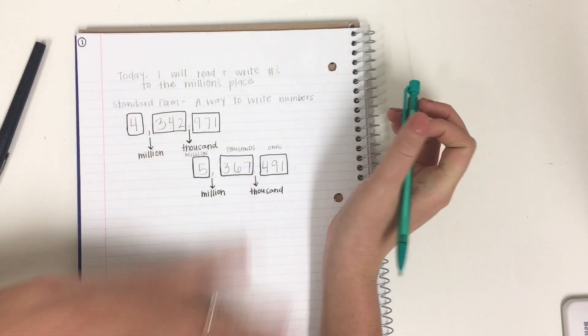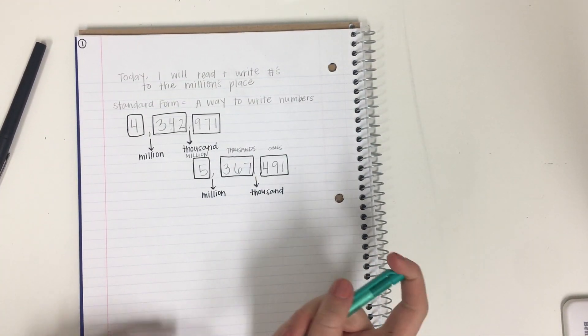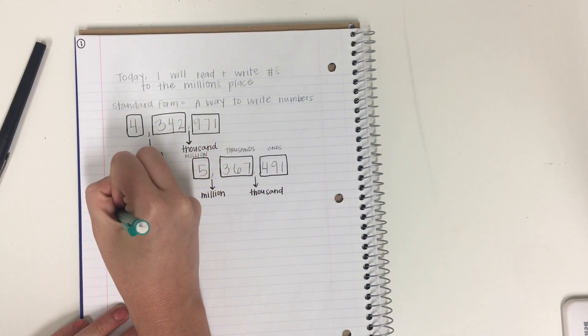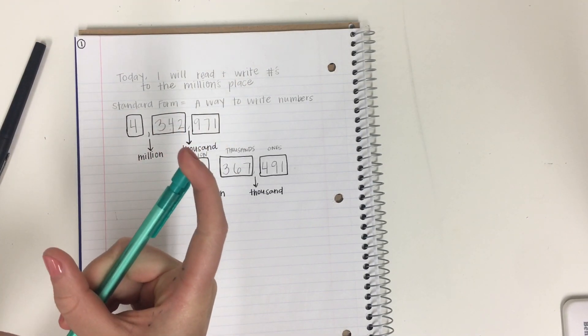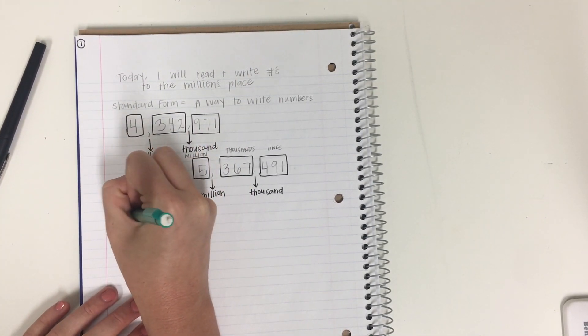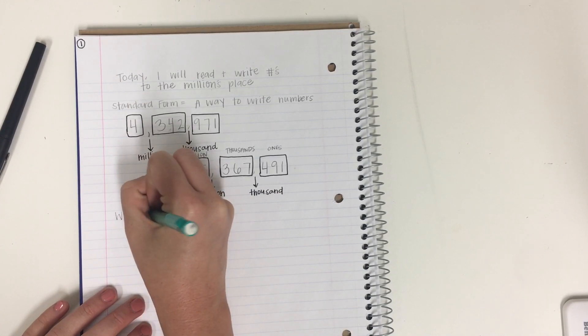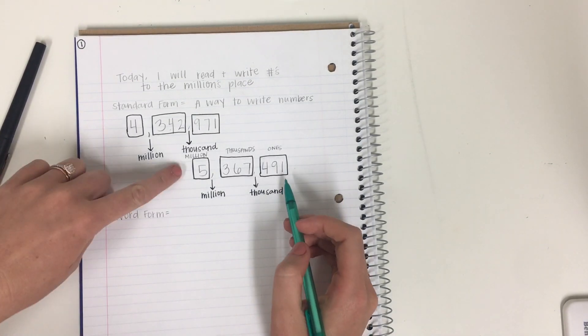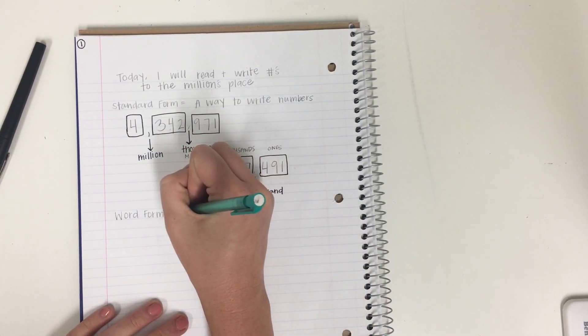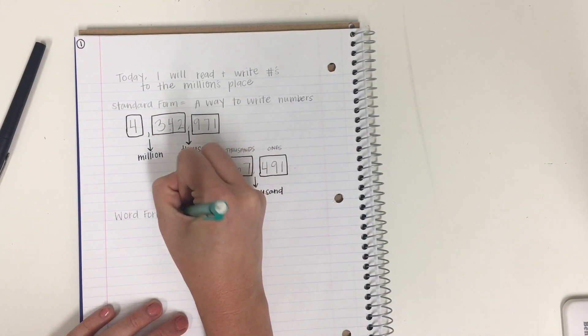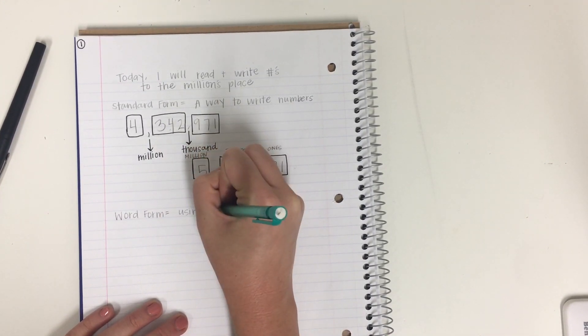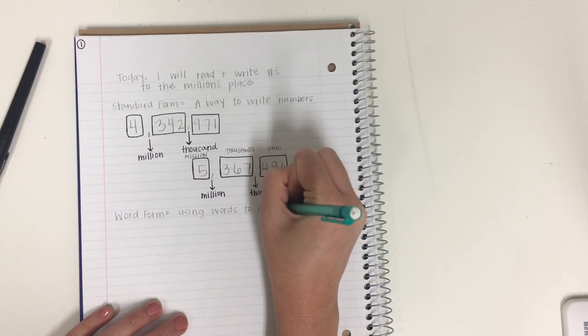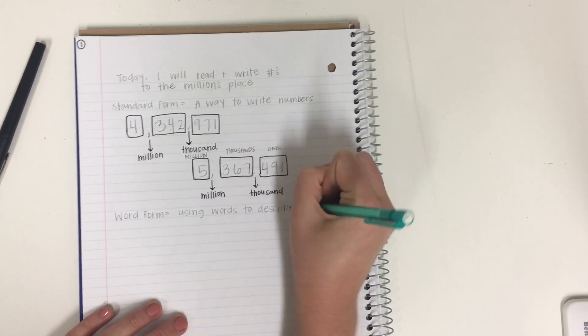Okay? So that's what standard form is. Now let's shift to reviewing the second way to read and write a number. And that is through word form. Word form is just putting what you're saying and putting into writing. So it's going to be using words to describe number.